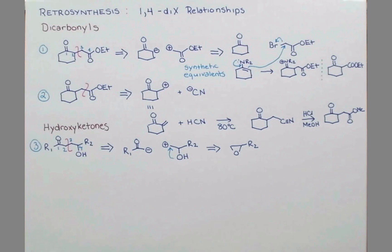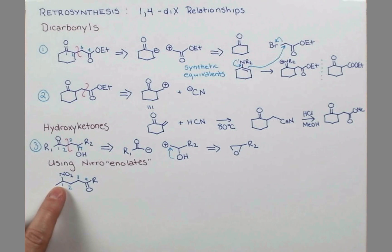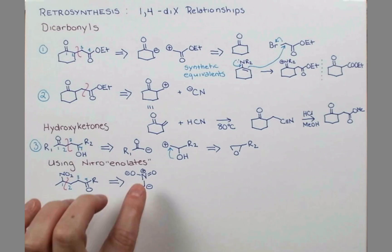We can also get this pattern using enolates of nitro compounds. Imagine we're trying to synthesize this. Let's number to reveal our 1,4 pattern. Now we need to figure out where to cleave our bond. When a nitro compound enolizes, it does so adjacent to the nitrogen, and the charge stabilizes it. So we're actually not like a normal enolate going to cleave between carbons 2 and 3. We're going to now cleave between carbons 1 and 2. Let's examine our synthons. Here's our nitro enolate. This is super easy to form with just a weak base because we have this resonance with the nitro group.